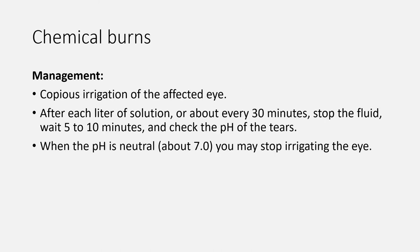Now let's move to chemical burns. Initial treatment involves copious irrigation of the affected eye. After each liter of solution, or about every 30 minutes, stop the fluid, wait 5-10 minutes, and check the pH of the tears. Urine dipsticks can be used safely to measure the ocular pH. When the pH is neutral, about 7.0, you may stop irrigating the eye. Remember that alkaline solutions are usually more damaging and often require more flushing to normalize the pH.